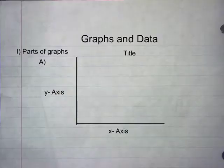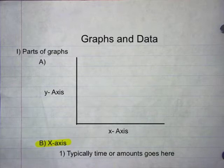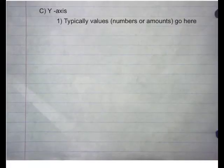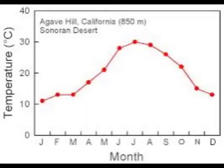The first thing to see is the parts of a graph. There's the title, the Y axis, and the X axis. The X axis typically has time or amount, and the Y axis typically has values such as numbers or amounts. These rules are set in place as a standard presentation of information. As you can see here, the values — in this case temperature — are on the Y axis, and the time is on the X axis.